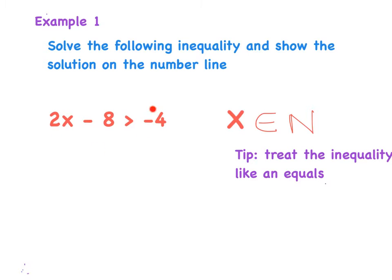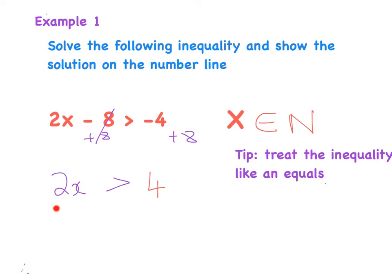I'm first going to balance by getting rid of the minus 8 to leave just x on that side. In order to get rid of the minus 8, I balance it by placing a plus 8 on both sides. The minus 8 and the plus 8 cancel, and my new line is 2x is greater than or equal to minus 4 plus 8, which is plus 4.